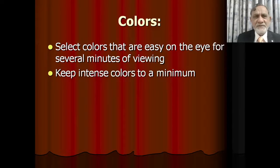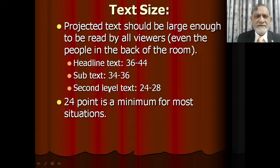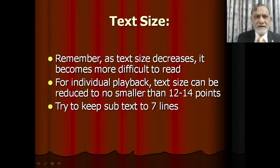Select colors that are easy on the eye for several minutes of viewing, and keep intense colors to a minimum. Regarding text size: projected text should be large enough to be read by viewers. Headline text is normally between 36 to 44 points, subtext 34 to 36, second-level text 24 to 28, and body text should not be reduced to smaller than 12 to 14 points.